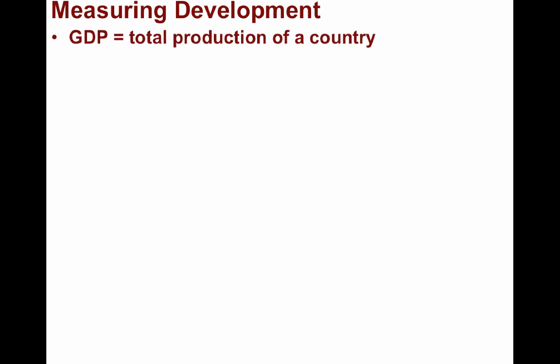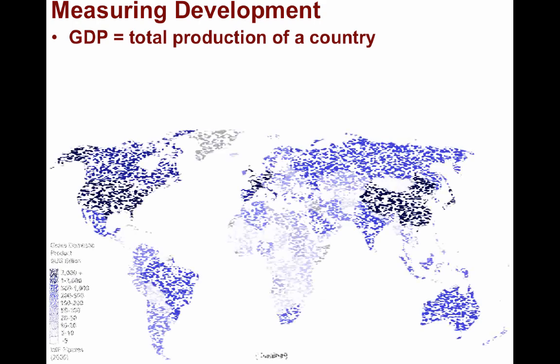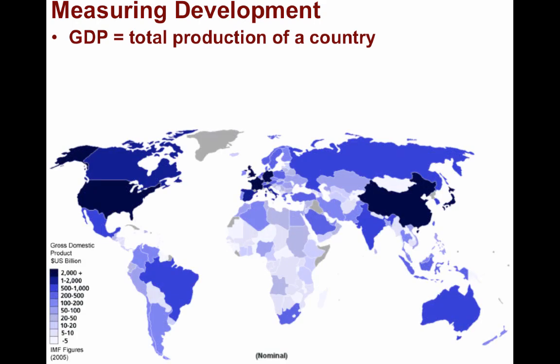To understand development, we have to first understand how to measure it. First off, GDP, or Gross Domestic Product, is the total value of all goods and services produced by a country in a year. Here's a choropleth map which shows you the contrast between the poorest countries and the richest in terms of Gross Domestic Product.